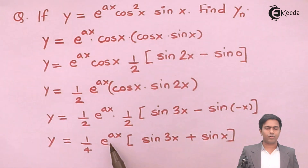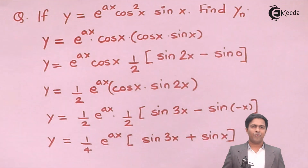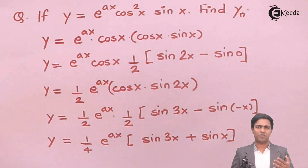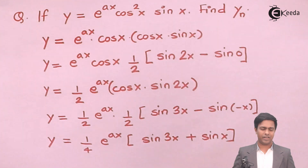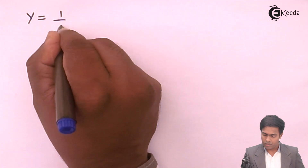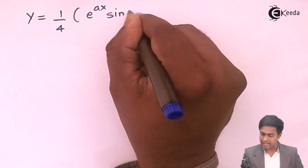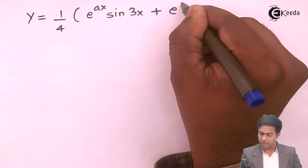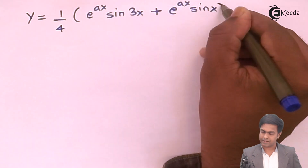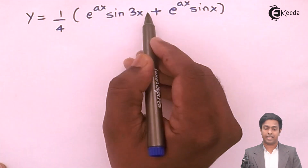We can now distribute e^(ax) into the bracket: y = ¼[e^(ax) sin 3x + e^(ax) sin x]. The function is now in the standard form, and we can apply the nth derivative formula to each term separately.